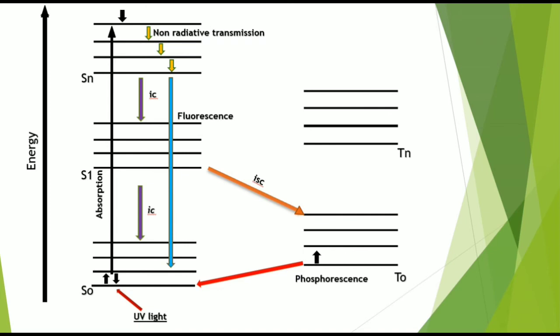The third one is fluorescence, in which there is a transition from the singlet excited state to the singlet ground state. The fourth is inter-system crossing (ISC), where there is a transition between two iso-energetic vibrational levels having different spin multiplicities. During this transition, the triplet state is involved.